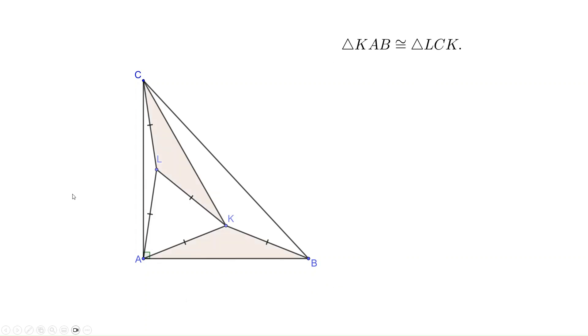What does that mean? It means triangle KAB and LCK are congruent. They have congruent angles here, and side-angle-side, side-angle-side.